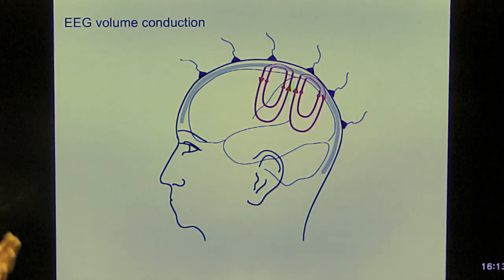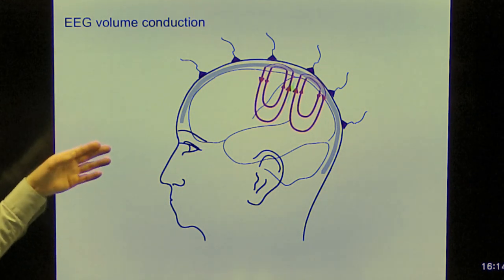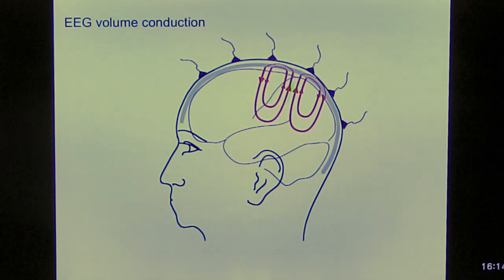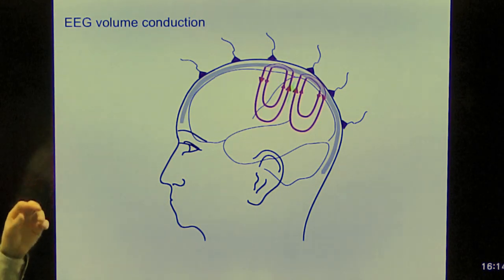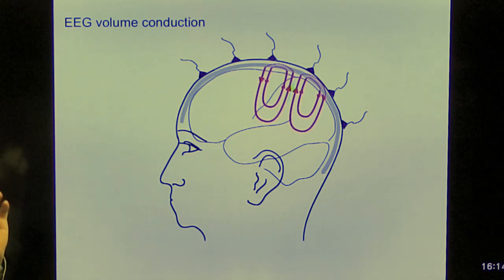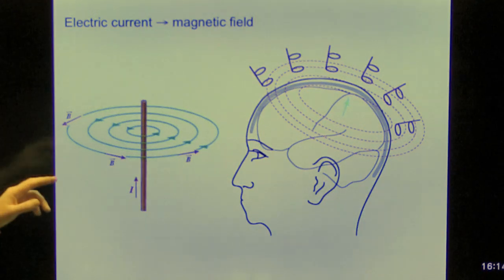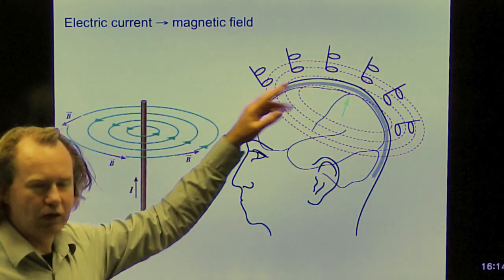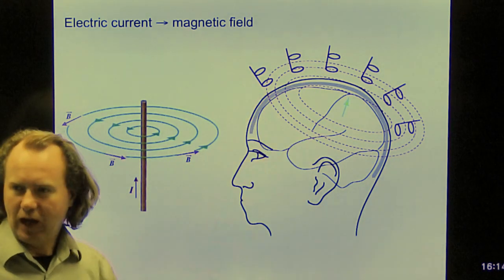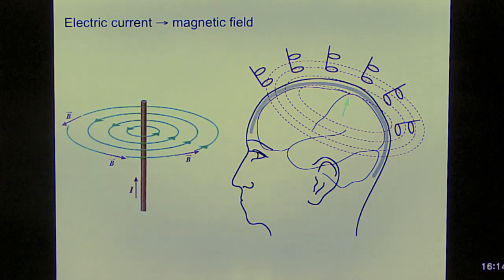With EEG, volume conduction makes sure that we can pick up the signal at the scalp. So the current is produced by the EEG, is conducted through the conductive tissues, brain tissue, skull, scalp. And we can record the consequences of that current as potential differences at the electrodes. With MEG, we record the magnetic fields. And as you see here, we have sensors that are above the head, not directly attached to the head. These sensors are actual gradiometers. The system here in NADMEG has planar gradiometers. But basically, they pick up the magnetic field.